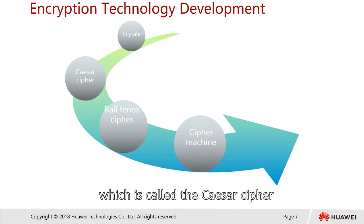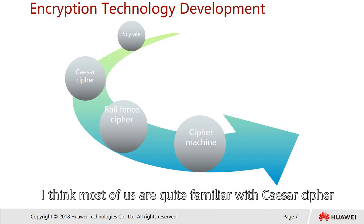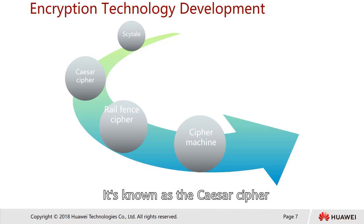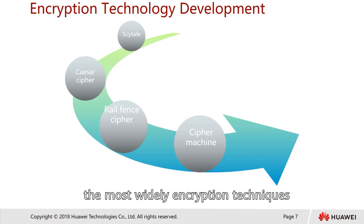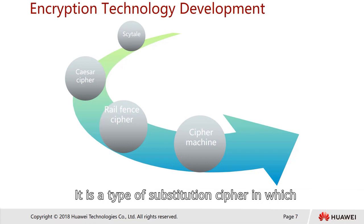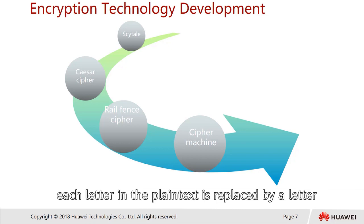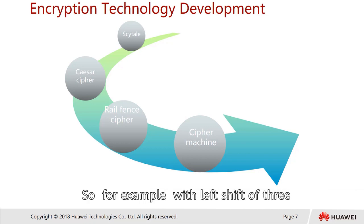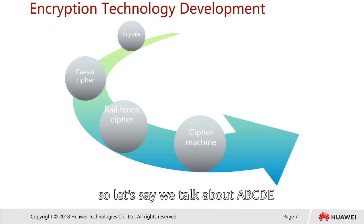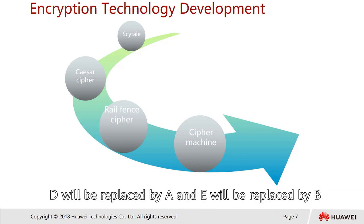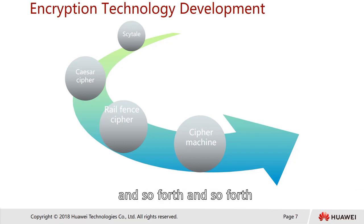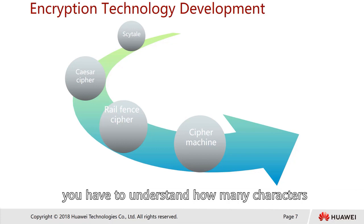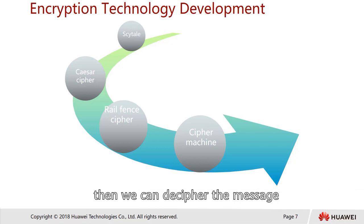The second one is called the Caesar Cipher. Most of us are quite familiar with it — it's one of the simplest and most widely known encryption techniques. It is a type of substitution cipher in which each letter in the plain text is replaced by a letter some fixed number of positions down the alphabet. For example, with a left shift of 3, D would be replaced by A, E would be replaced by B, and so forth. To read the message, you have to know how many characters have been shifted left or right, then you can decipher it.